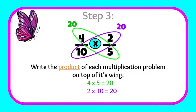Let's check out step three. Now we're going to write the product of each multiplication problem on top of the wing that we multiplied. So we'll write 20 over four times five and 20 over two times ten, because they both equal 20.